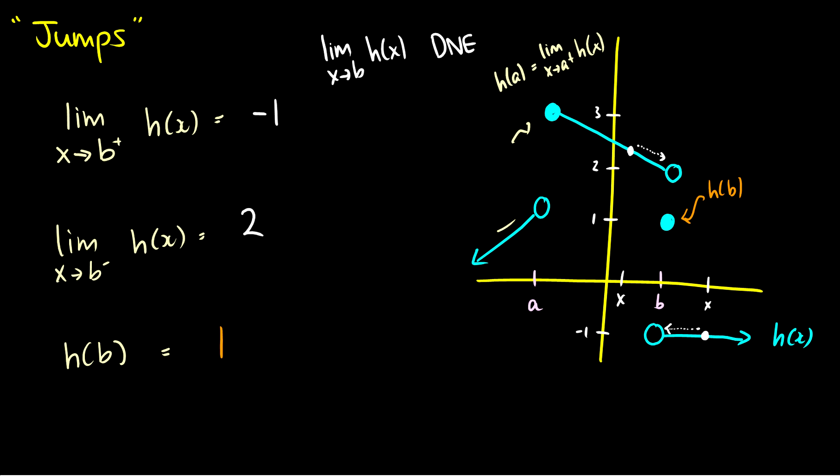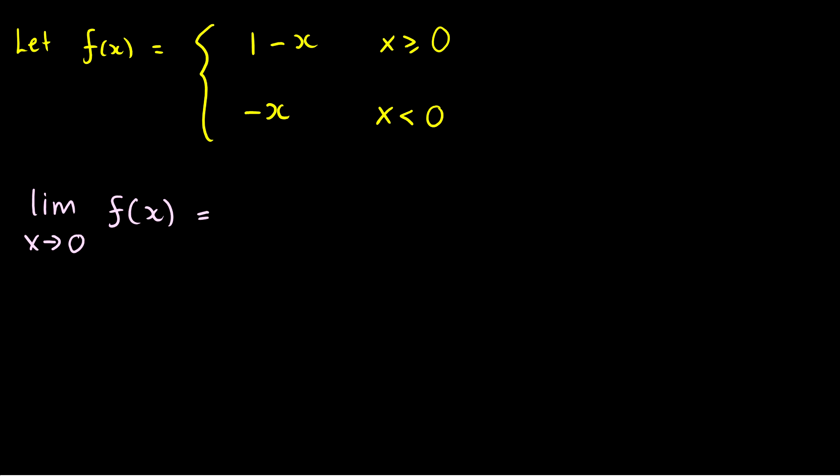So those are discontinuities and jumps. Now I've been showing curves without explicit definitions, but we can also work with piecewise functions that are defined algebraically. Here's a simplified version of an exam question: f(x) equals 1 minus x if x is greater than or equal to 0, and f(x) equals negative x if x is less than 0. The question is: what is the limit as x approaches 0 of f(x)?